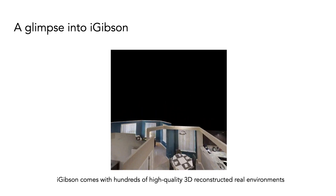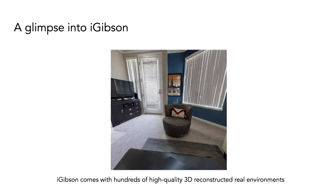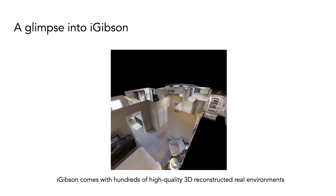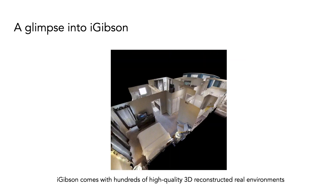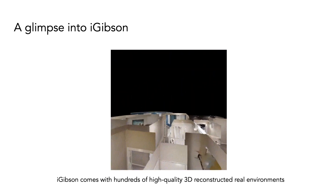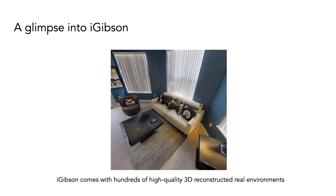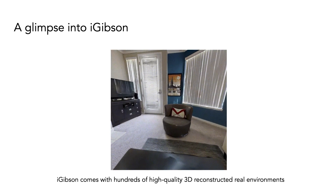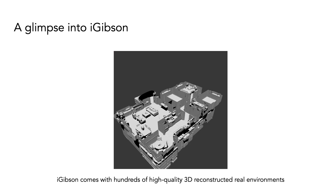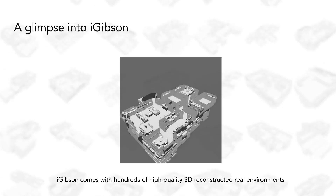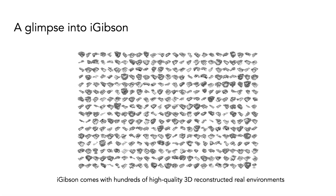iGibson comes with hundreds of 3D reconstructed real environments where robots can be trained. Ten of them are annotated with interactive instances of furniture like chairs, sofas, or tables. The reconstructions are high quality with a high level of detail in shape and color. All of these environments make the dataset included in iGibson the largest dataset of 3D reconstructed real-world environments, including interactive objects.